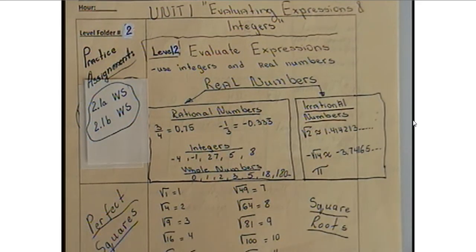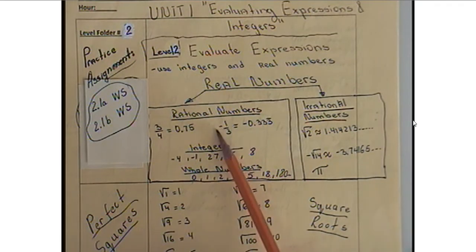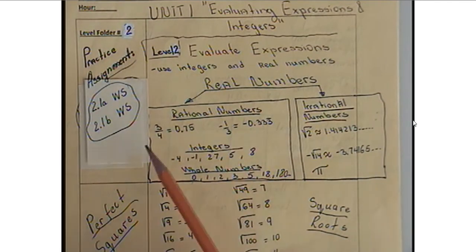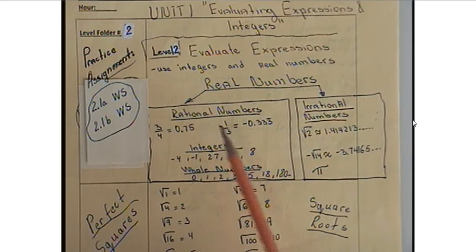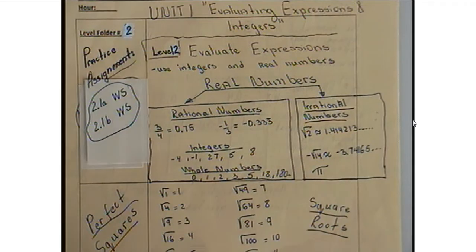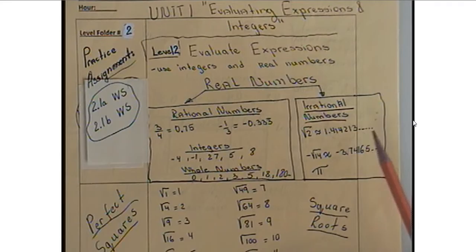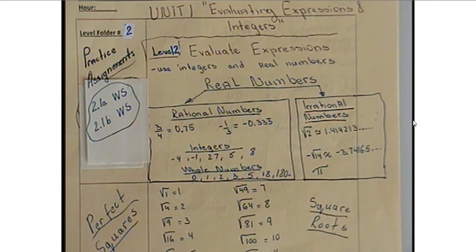Integers are those that have negatives, zero, and positives — all of those that go on the number line and are not decimals or fractions. Rational numbers, on the other hand, are fractions — positive, negative, decimal numbers, repeating numbers, or numbers that have the same pattern.